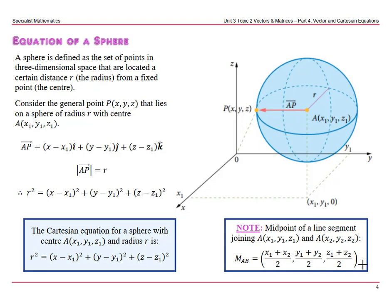This video covers how to find the equation of a sphere. As you can see in this diagram, we have the three-dimensional Cartesian plane with our x, y, and z axes, and a sphere sitting there where we have the centre of the sphere as x1, y1, z1, and then we have a point P on the sphere given by x, y, z. No matter where we go on this sphere, the distance from the centre to a point on the sphere will be the radius.